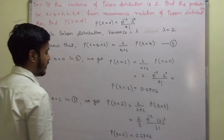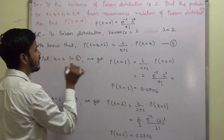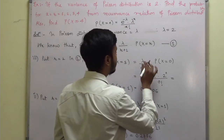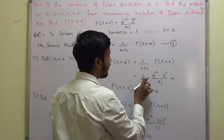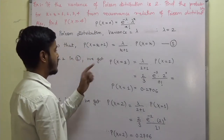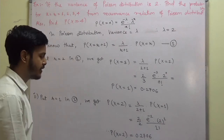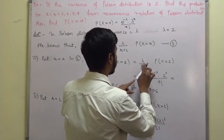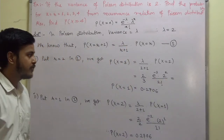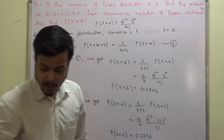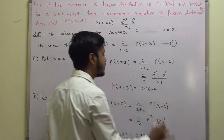To find P(X = 3), put r = 2 in the recurrence relation: P(X = 3) = lambda upon 3 into P(X = 2). Substituting lambda = 2 and P(X = 2): this gives 2 by 3 into e to the power minus 2, 2 to the power 2 upon factorial 2, which comes out to be 0.1804.